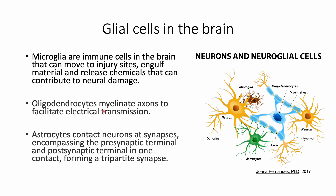Oligodendrocytes myelinate neuronal axons and facilitate neural transmission. These cells were introduced at the very beginning of the course. The last category are astrocytes, and these cells form contacts with neurons and will be the focus of this video.